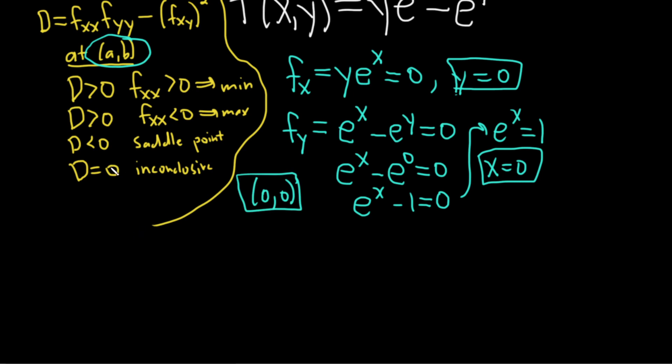Let's go ahead and compute big D. To do that, we need fxx, fyy, and fxy. Let's do fxx. I'm going to change color here. We have to be really careful. fxx is the partial with respect to x of fx. Here's the first partial derivative. Again, y is a constant. The derivative of e^x is e^x, so we get ye^x.